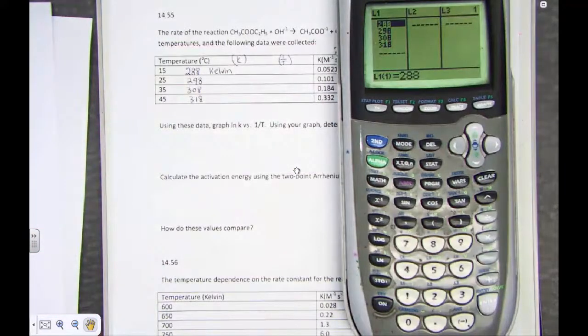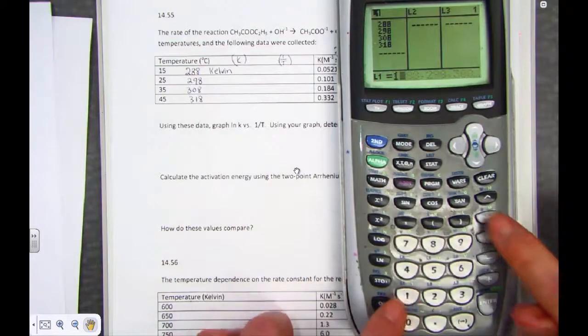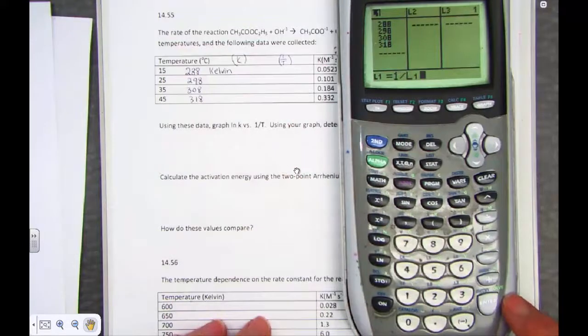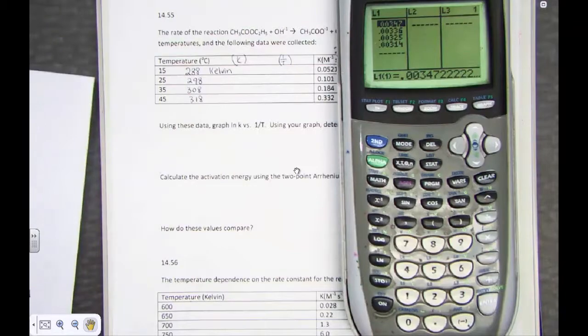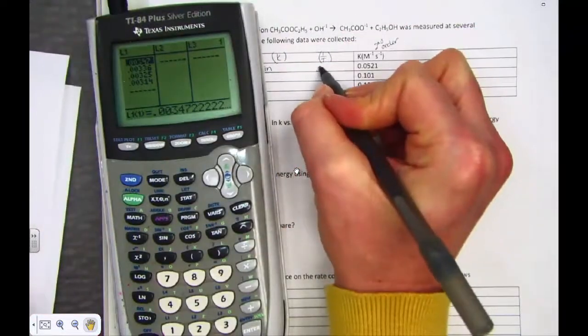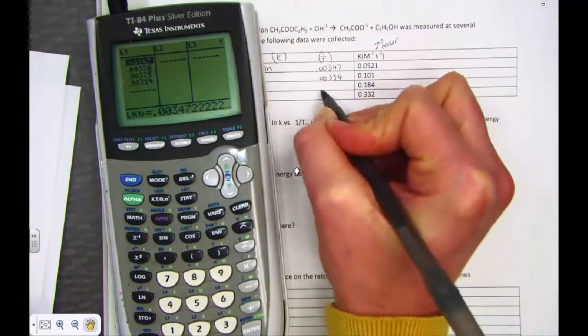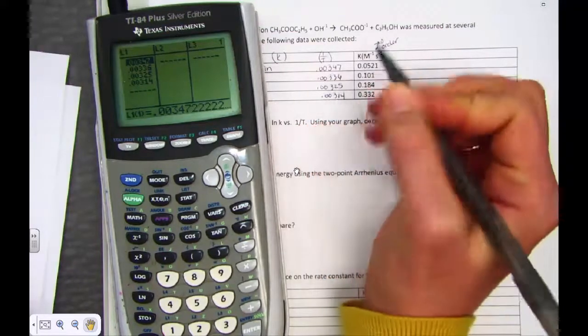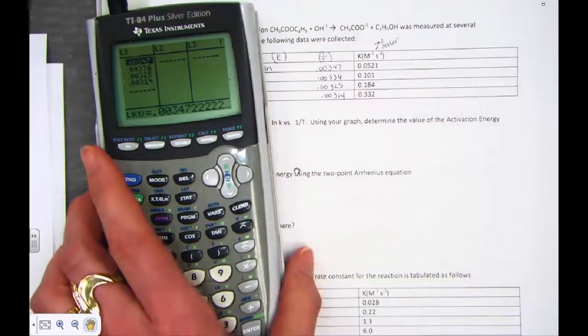But in order to graph, we need the reciprocals. So now I'll put my cursor back up on L2, excuse me, it's list one. One divided by list one to turn those into reciprocal values. And this is the values that we find: 0.00347, 0.00336, 0.00325, 0.00314. The reciprocal of the Kelvin temperatures in list one.